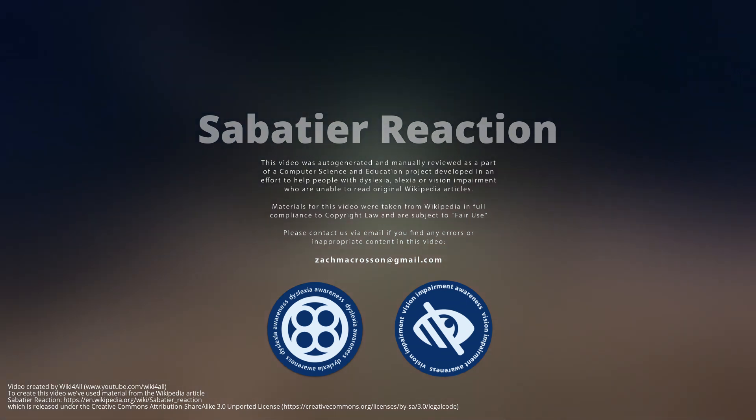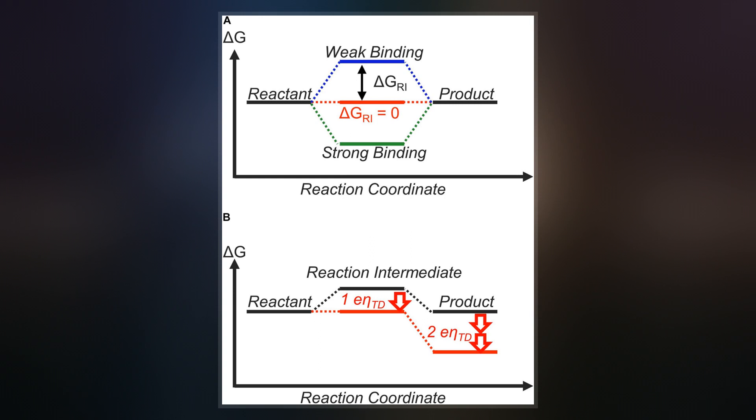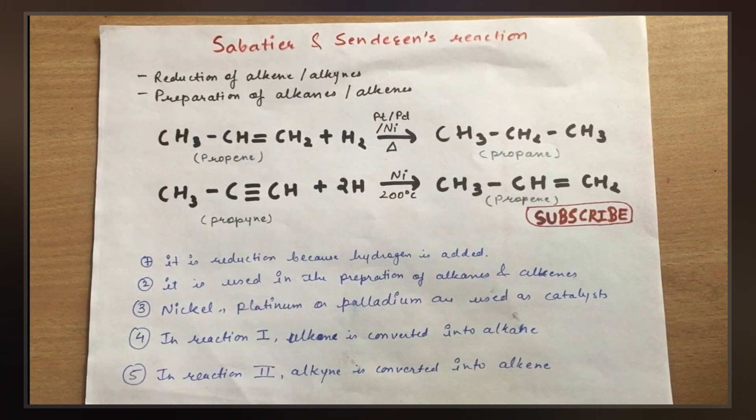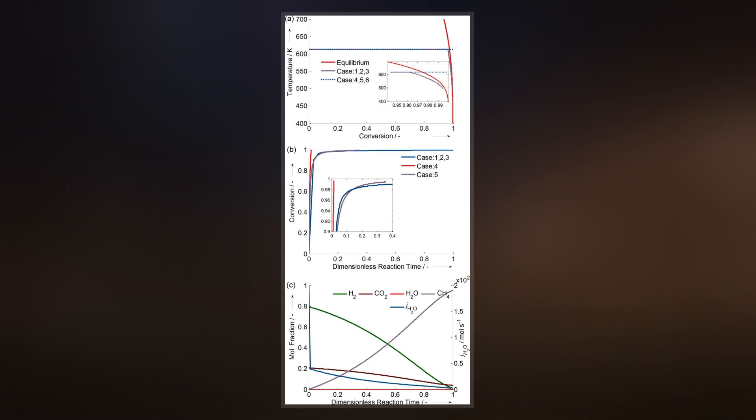The Sabatier reaction, or Sabatier process, produces methane and water from a reaction of hydrogen with carbon dioxide at elevated temperatures and pressures in the presence of a nickel catalyst. It was discovered by the French chemists Paul Sabatier and Jean-Baptiste Senderens in 1897. Optionally, ruthenium on alumina makes a more efficient catalyst. It is described by the following exothermic reaction.